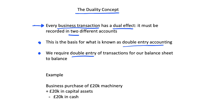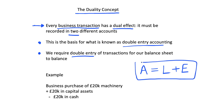We require a double entry of transactions for our balance sheet to balance. Looking back at our previous videos, we have the fundamental accounting equation, which says that our assets have to be equal to our liabilities plus our equity. Assuming this holds to begin with and our balance sheet is currently balancing as it should, let's consider a business transaction as our example.